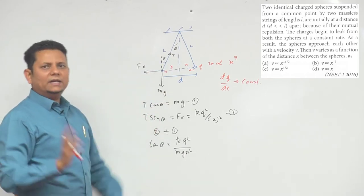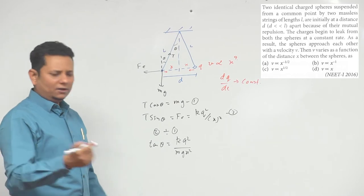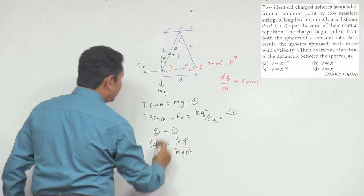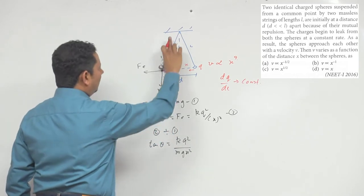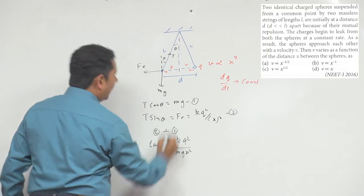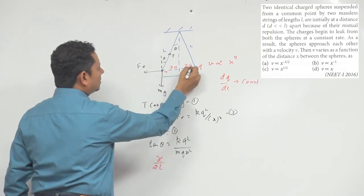So tan theta can be written as sin theta or it can be written as - left hand side we can write this as x divided by l. So this is your x divided by l, or your x divided by 2l, this is your x by 2 divided by l.